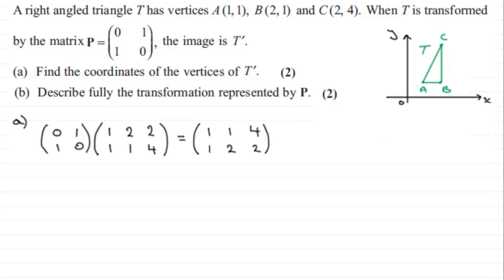If we were to plot these points out, we would get something like this. Okay, A stays put at (1,1), B is now over here at (1,2), and C is over here at (4,2).